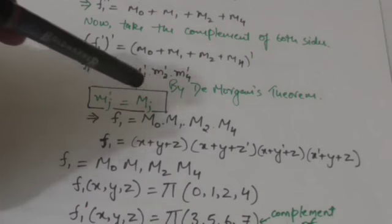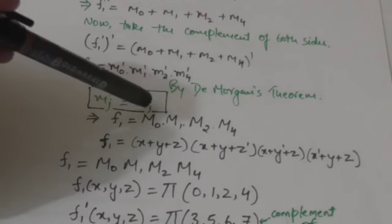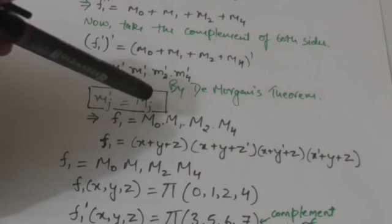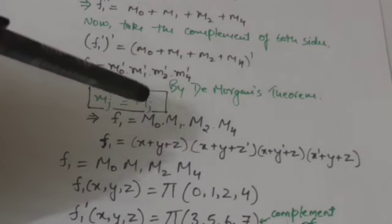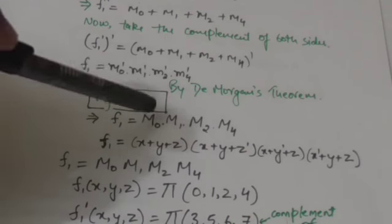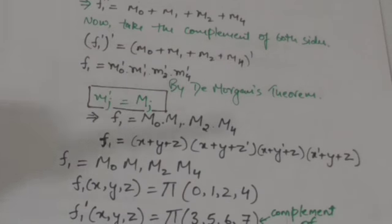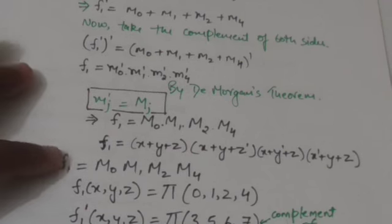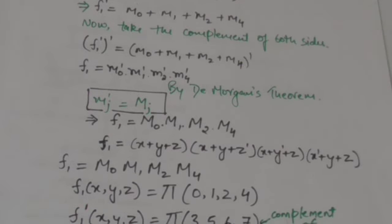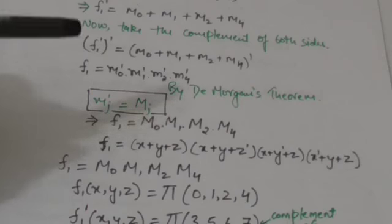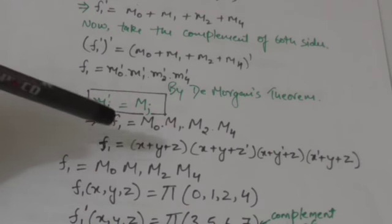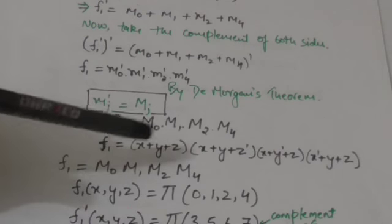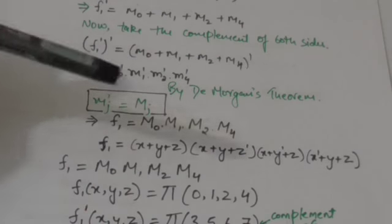So when we convert these max terms into their original form — in the form of binary variables — then it would become like this. So the function F1 can be represented as the product of max terms M0, M1, M2 and M4. In shorthand it can be represented as shown here.